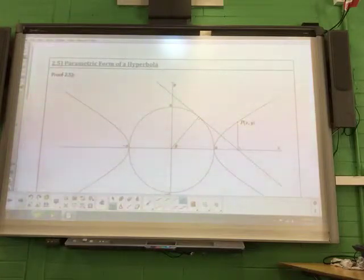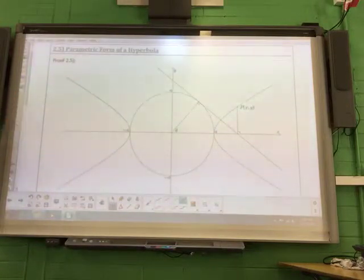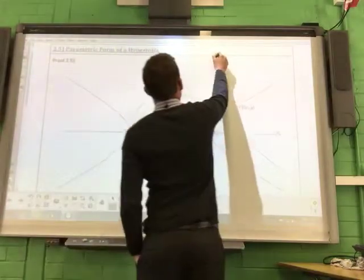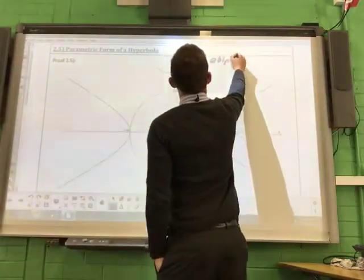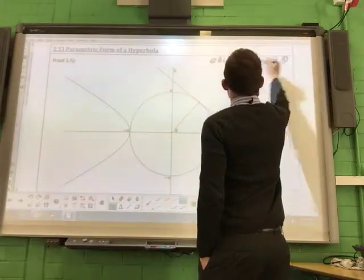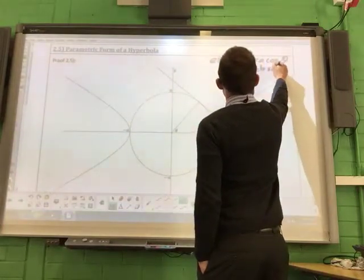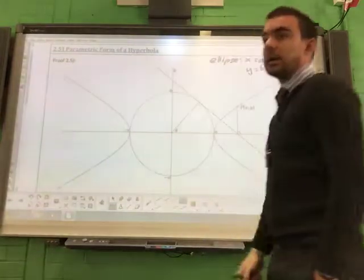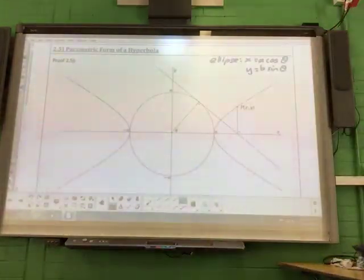So the parametric form of a hyperbola - we've just established for the ellipse. For the ellipse, x is a cos theta and y is b sine theta. That's for the ellipse, you need to know that.